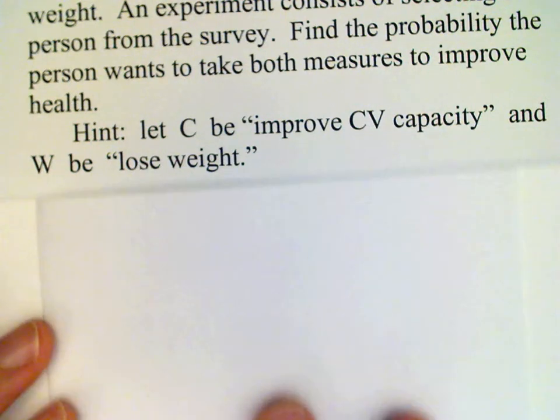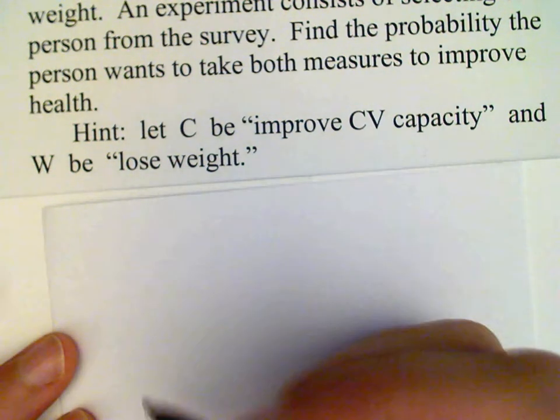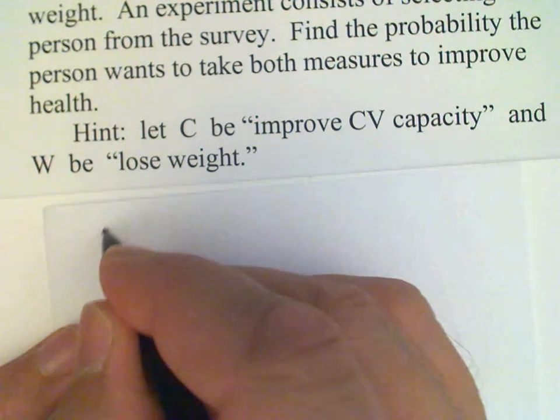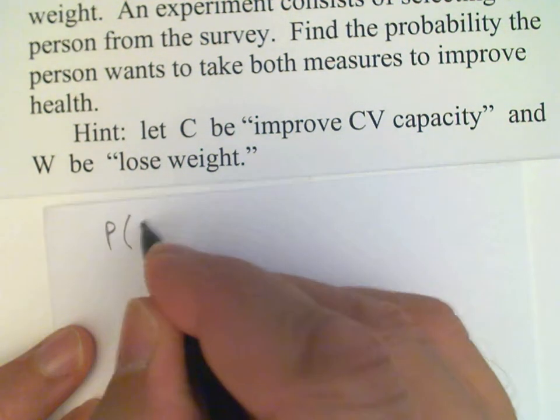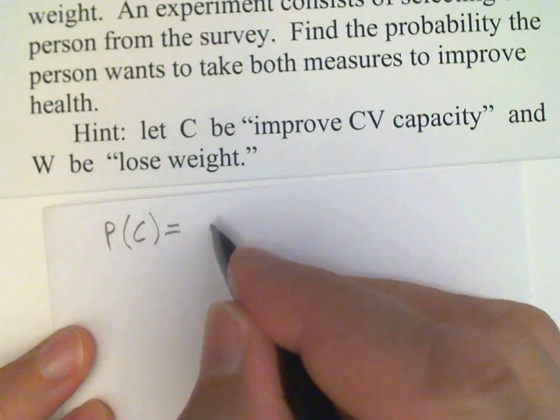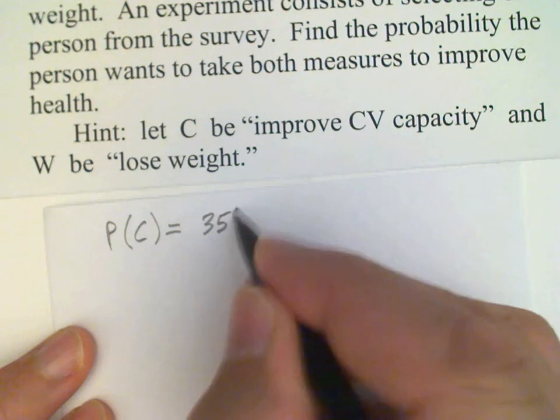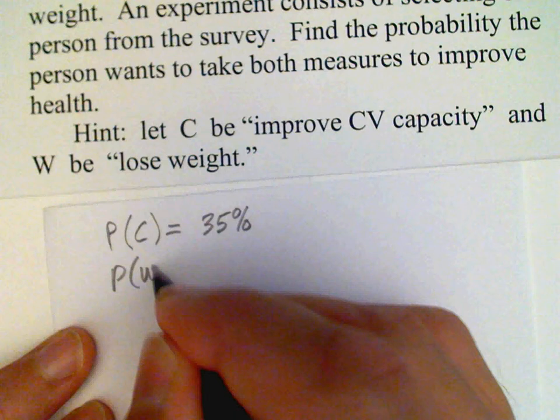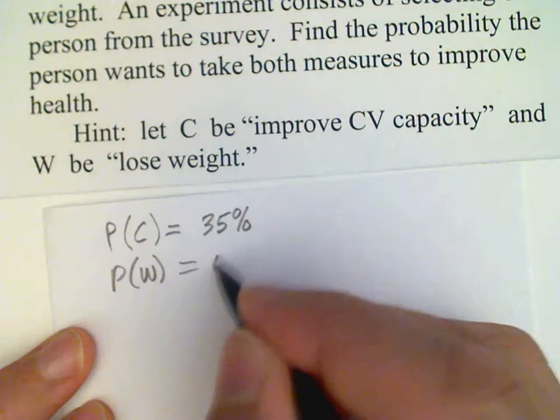And then from the information that's given, the probability of C is 35% and the probability of W is 55%.